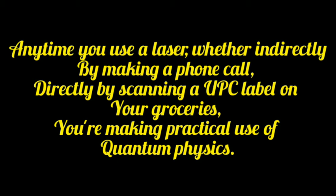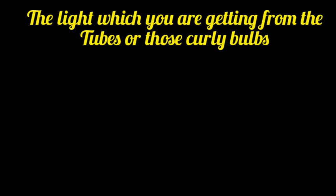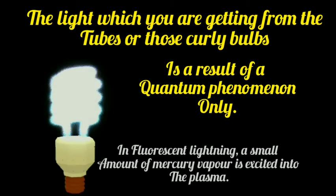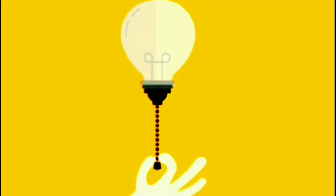Fluorescent light: the light which you are getting from the tubes or those curly bulbs is a result of a quantum phenomenon. Only mercury has the ability to emit light in the visible range, so the next time you switch on the lights of your room, make sure you thank quantum physics.